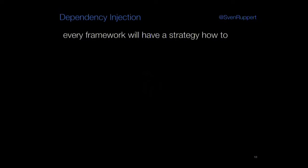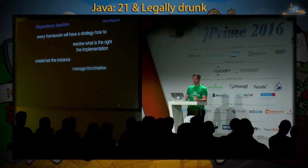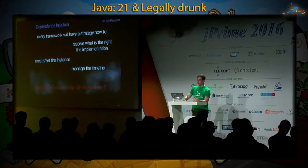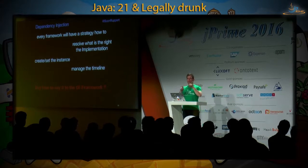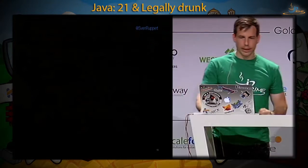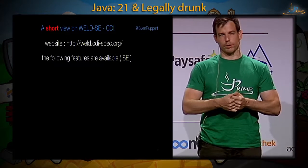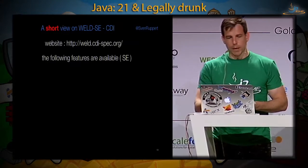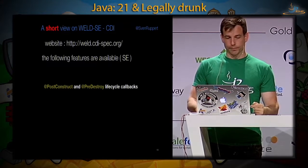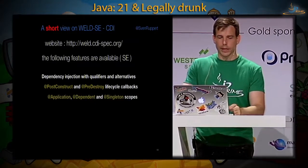Every framework will have a strategy for how to resolve what's the right implementation, then create and set an instance, and manage the timeline. But how do I communicate all this to my dependency injection framework? We have different ways which more or less work. Who knows Weld? It's the reference implementation for CDI — Context and Dependency Injection. What does 'Context' mean? We have something to manage life cycles — post-construct and all this. You have something like qualifiers and alternatives. You have scopes, interceptors, decorators, stereotypes, and events.